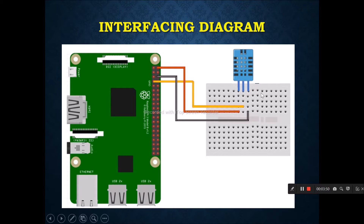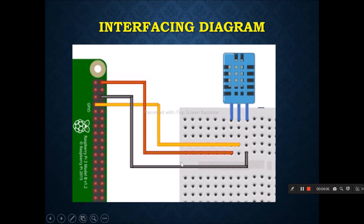For this experiment, I am using a circuit diagram in which the VCC pin of DHT11 is given to the 5V pin, and the ground pin of DHT11 is given to the ground. The data pin is connected to pin number 4 of Raspberry Pi. This is a zoomed-in structure of the interfacing diagram.